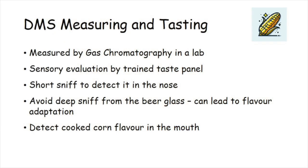When tasting for DMS in beer, bring the glass close to your nose and take a short sniff before moving the glass away. You can also use a drive-by method by moving the glass left and right under your nose, repeated a few times. Taking a deep sniff from the beer glass could cause you to become blind to the flavor, since this is a sulfur compound and it is easy to become adapted — the more you smell it, the less you can detect it. After taking a small sip, the cooked corn flavor can be detected in the mouth.